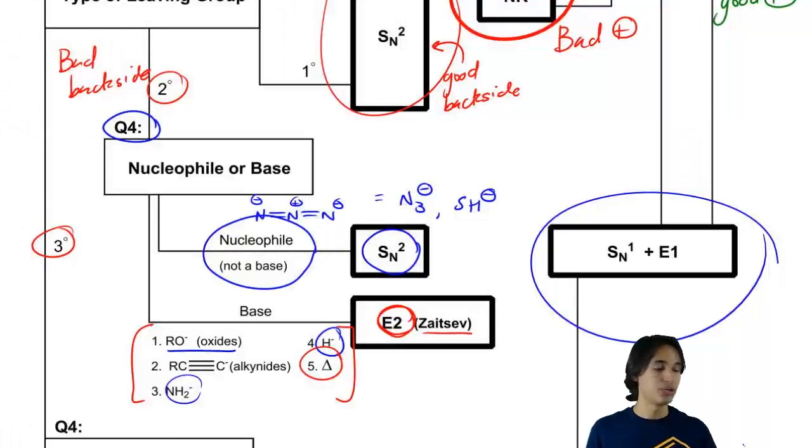Because the environment that favors SN1 is also favored for E1. Are you guys getting that? So we can never really separate the two.